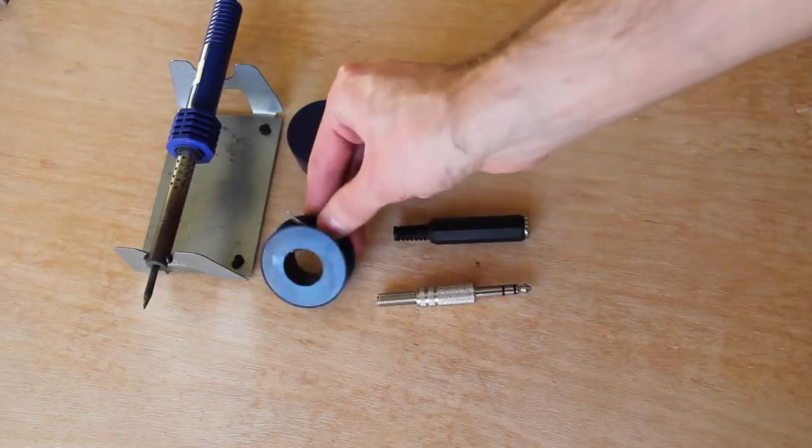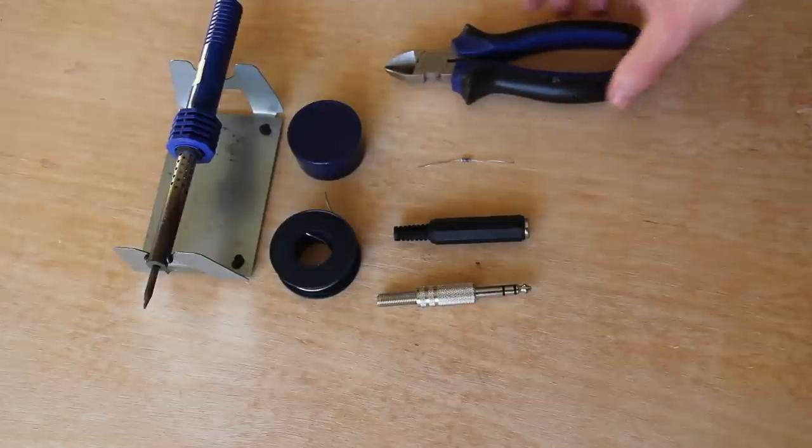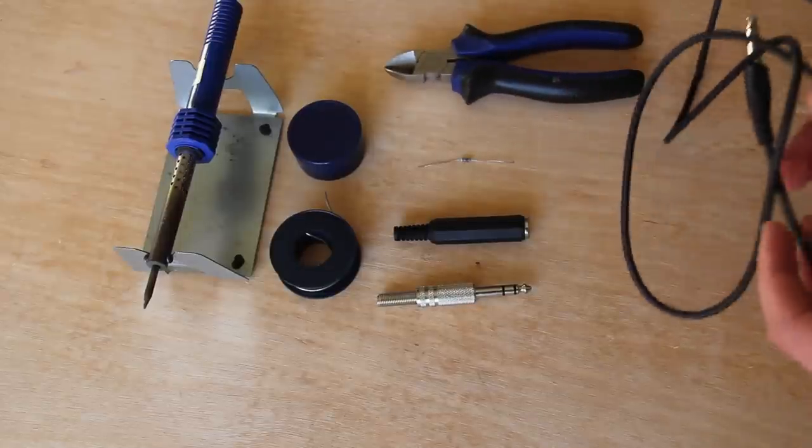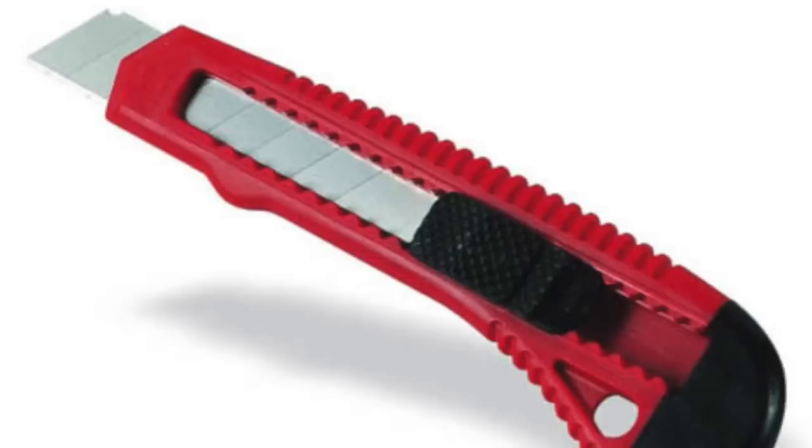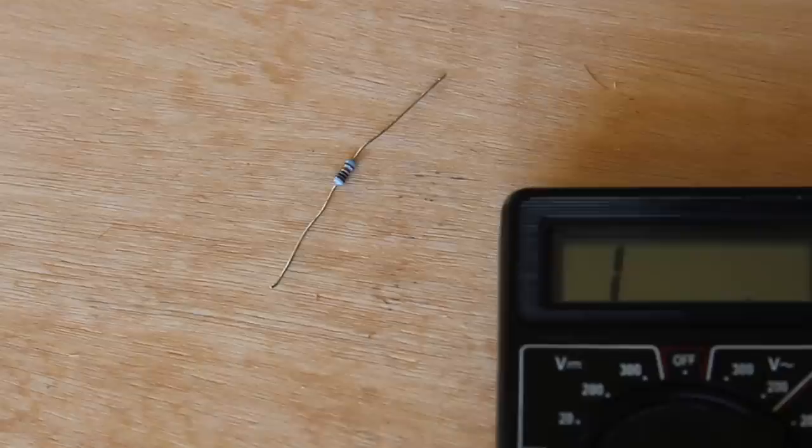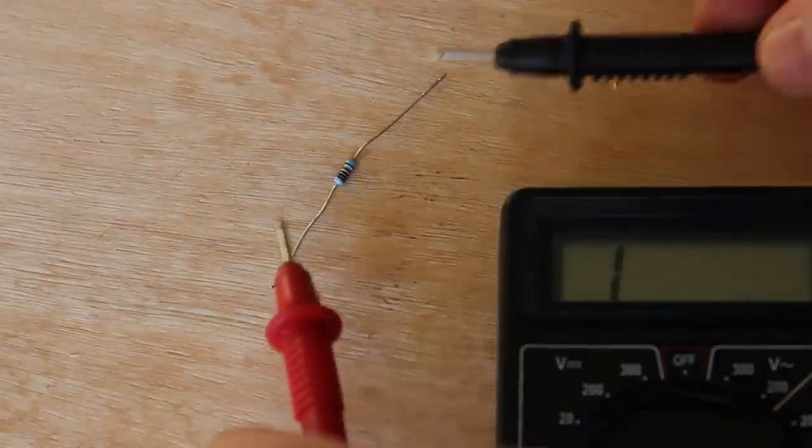Tin solder plus soldering flux, a side cutter and a mono jack cable, the one with two rings. You can use a guitar cable. You also might need a knife, lighter and forceps. Use a multimeter if you have one.